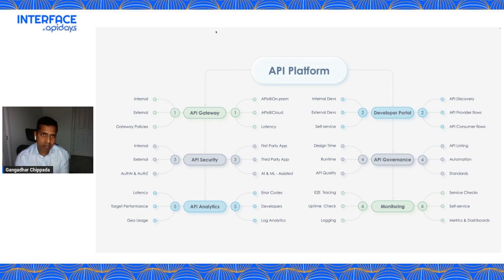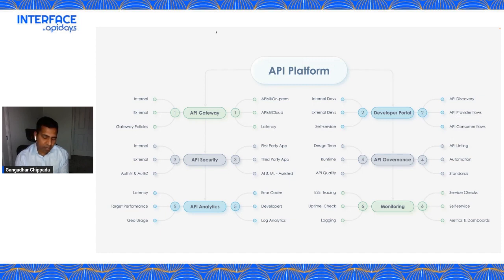API discovery is such an important topic. If you want a good API platform and to implement your API-first strategy, API discovery is critical. You could have 10 different gateways, but you can solve the discovery problem with a good API developer portal that brings all APIs together in one single place. When building developer portals, you also need to think through what sort of provider flows to offer for publishing and promoting APIs, as well as the consumer flows.